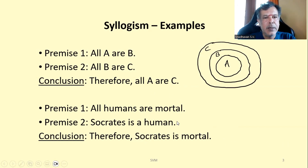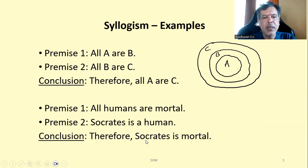Second example: All humans are mortal. Socrates is a human. So we can conclude that Socrates is mortal.